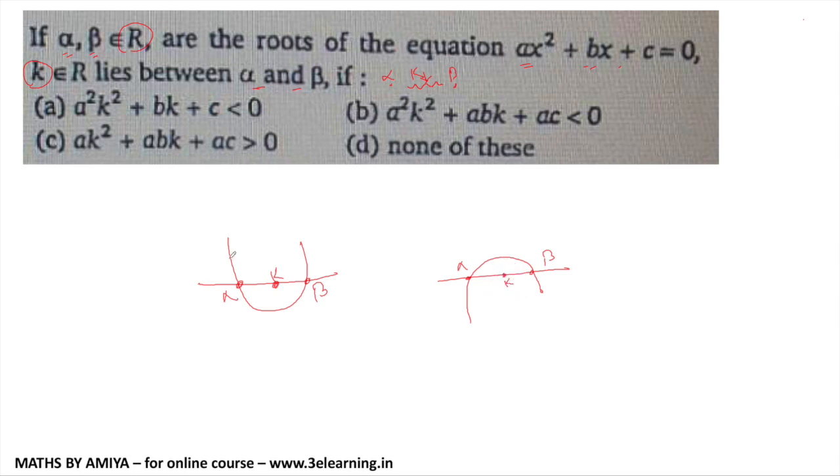this one is alpha, this one is beta. And we have a k-value in between the roots. When we have this graph, when the a is positive, we have this graph, and for this value, the entire function ax square plus bx plus c is negative.